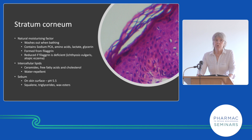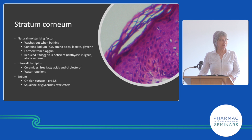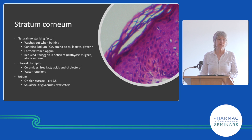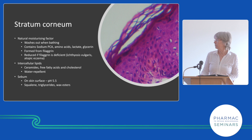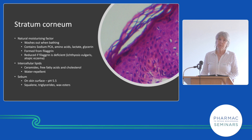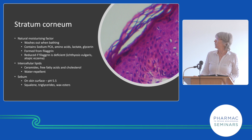Filaggrin deficiency: a significant proportion of people with stratum corneum difficulties like eczema and ichthyosis — fish scale skin — are deficient in filaggrin or the filaggrin doesn't work properly. It's a protein that forms the skeleton of cells making your stratum corneum. Lipids — these fatty things — repel water and don't wash out so easily. Sebum is only on the scalp, face, and a little on the chest and back, and is good at retaining the stratum corneum.